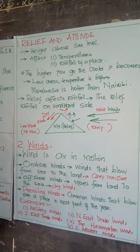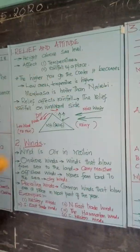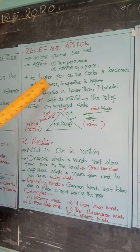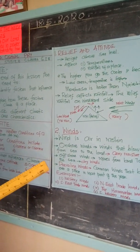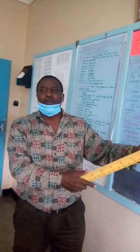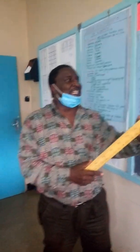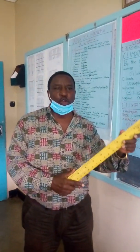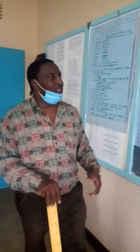We have a good example for temperatures: the higher you go, the cooler it becomes. Low areas have high temperatures. That is why in Mombasa people sweat — you don't find people in suits. Unlike in Nairobi, which is cold. Therefore the temperatures in Mombasa are high, while those in Nairobi are lower.